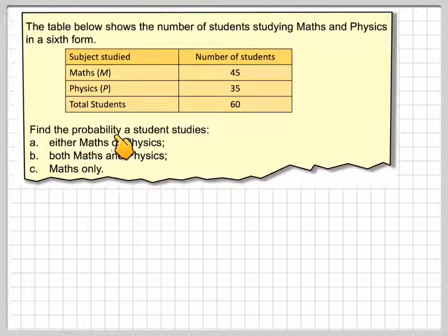It says find the probability a student studies either maths or physics, both maths and physics, and maths only.